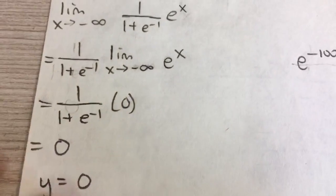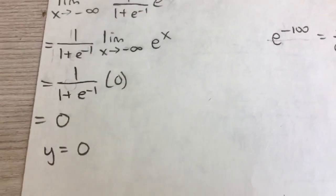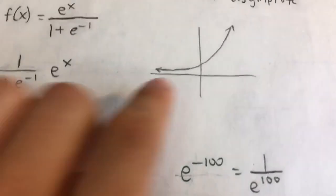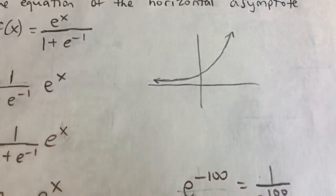0 times anything is 0. And so we say that the equation of our horizontal asymptote is y equals 0. And you can see, just by this rough sketch, you can see it kind of tends to 0 as it goes to negative infinity.